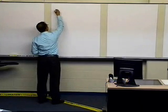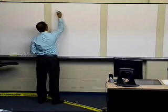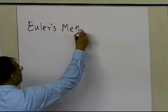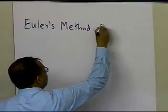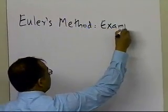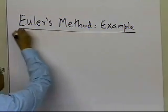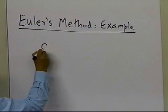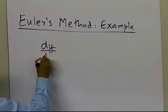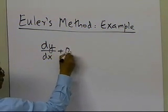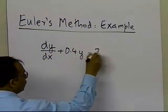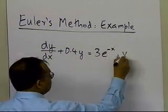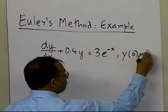In this segment, we're going to take an example of Euler's method. Euler's method is the first method which people talk about when they are solving ordinary differential equations. So let's take an example: somebody gives us a differential equation of dy/dx plus 0.4y equals 3e to the power minus x, and y(0) is given as 5.